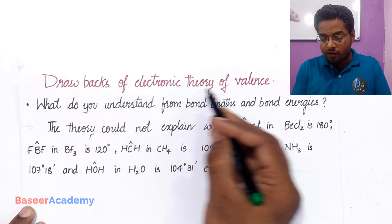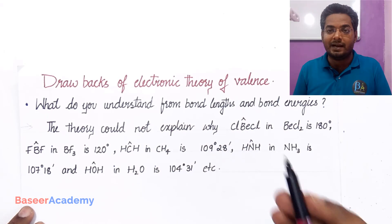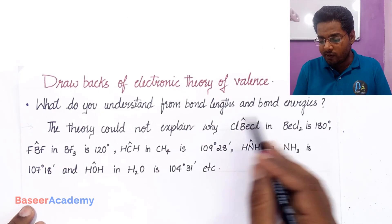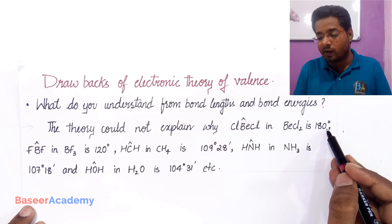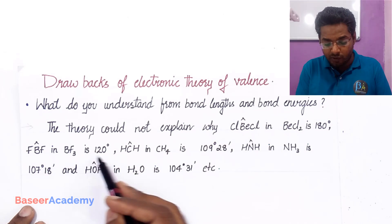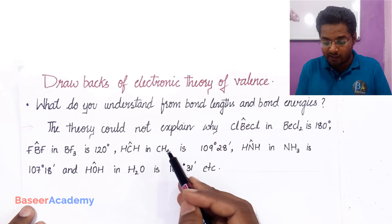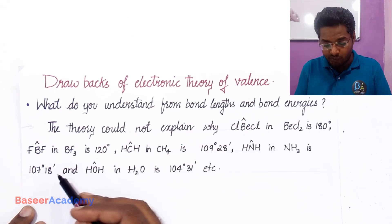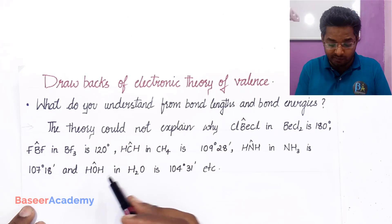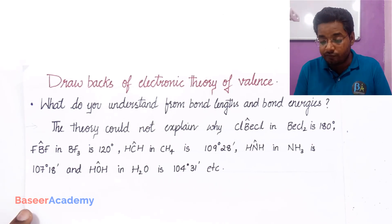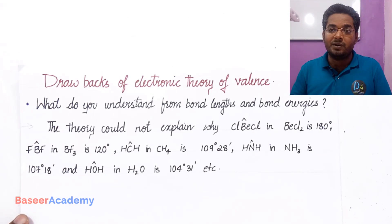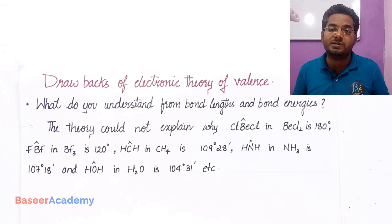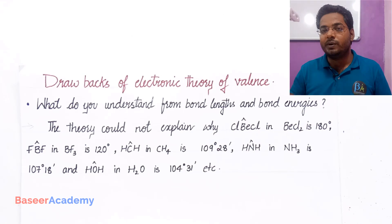The second drawback is that electronic theory of valence could not explain why the Cl–Be–Cl bond angle in beryllium chloride is 180°, why the bond angle in boron trifluoride is 120°, why the bond angle in methane is 109°28', why the bond angle in ammonia is 107°48', and why the bond angle in water is 104°31'. By not being able to explain the bond angles, it also could not explain the shapes of the molecules.